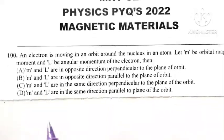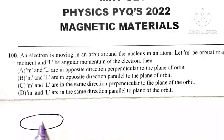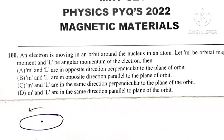See here, the electron is revolving around the nucleus, say in anti-clockwise direction.